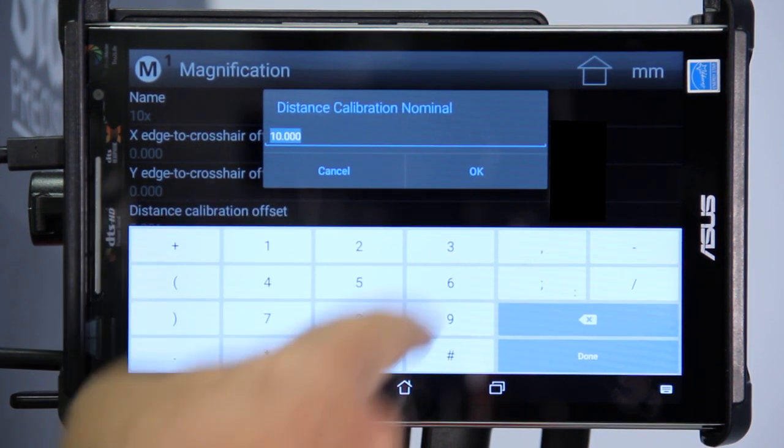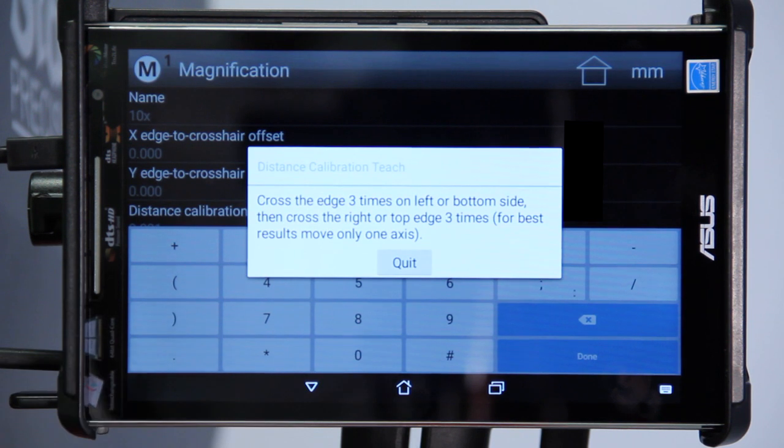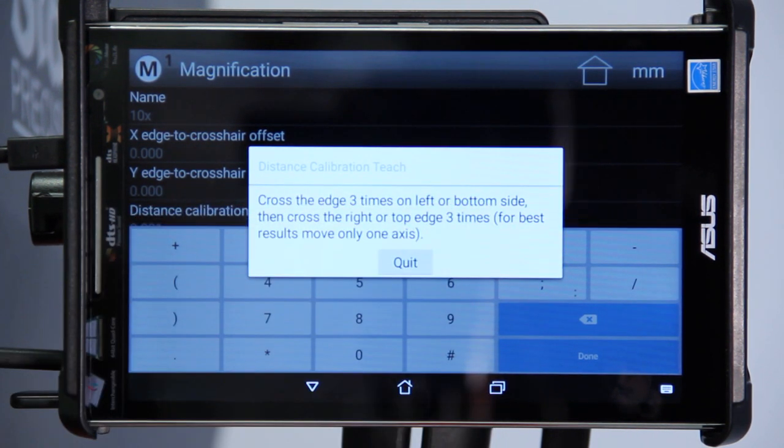Put the size of the calibrated artifact and hit OK. Do a distance calibration on the same artifact you used earlier.